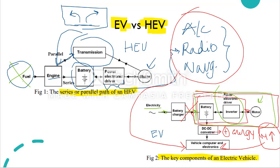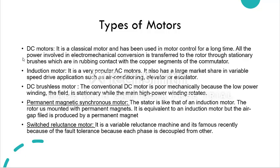There are also different types of motors that are being used. You have motors labeled here and here, but what does that really mean? In the market there are different types of motors. First of all, you have a DC motor which is very common in the market. This is a classical motor because it's been used for a long time. It has electromechanical conversion that's transferred to your rotor through stationary brushes which are in rubbing contact with copper segments of your commutator.